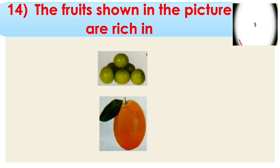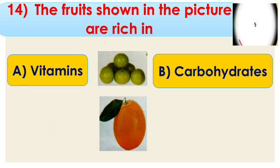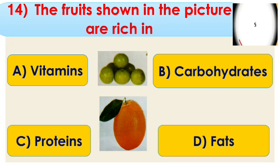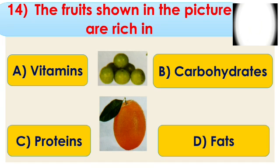Question number 14: the fruits shown in the picture are rich in — options are A. Vitamins, B. Carbohydrates, C. Protein, and D. Fats. First identify the picture — this is a picture of avocado and orange. These two fruits are rich in vitamins, so the right answer is option A. Specifically, Vitamin C.